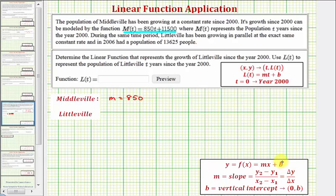And then b, the vertical intercept, is equal to 11,500, which would be the ordered pair (0, 11,500), which means in the year 2000, since t = 0 represents the year 2000, the population was 11,500.